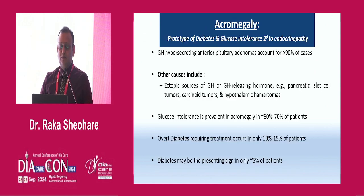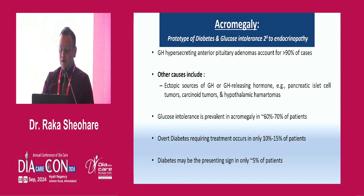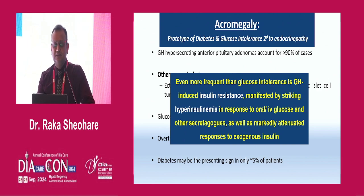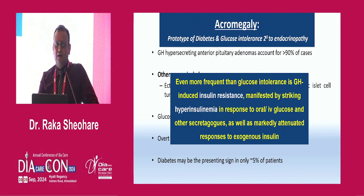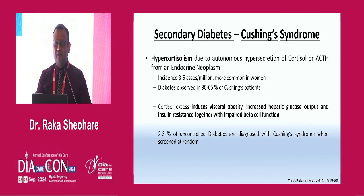Other causes include ectopic sources of growth hormone or GH-releasing hormone from pancreatic islet cell tumors or carcinoid tumors. Glucose intolerance is prevalent in acromegaly in 60–70% of patients, and these patients do not respond to usual treatment because you are missing the underlying cause. Even more frequent than glucose intolerance is GH-induced insulin resistance, manifested by striking hyperinsulinemia in response to oral or IV glucose, and a markedly attenuated response to exogenous insulin.